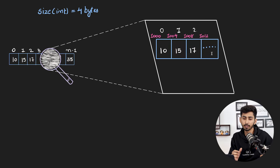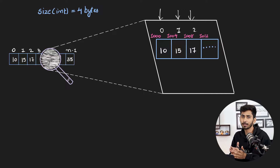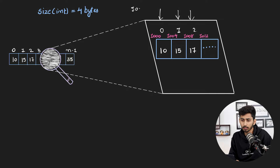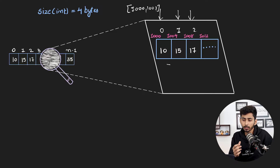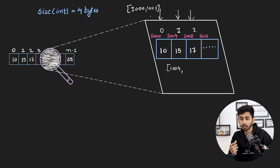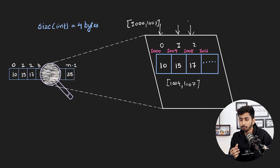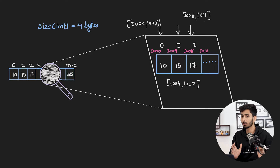Here I have taken an array of size n. You can observe cell number zero, cell number one, and cell number two. Since the size of an integer is four bytes, the bytes from address 1000 to 1003 are allocated to cell zero. Cell one gets bytes 1004 to 1007, and cell two gets bytes 1008 to 1011. Four bytes are allocated to each and every cell — that is what contiguous memory allocation means for an array.